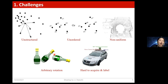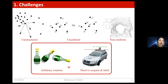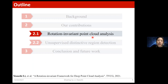For the first two challenges, there are many existing works such as PointNet, DGCNN, and PointCNN, so I won't go into details on those. For the non-uniform issue, our next speaker Rui Hui will address that. In my talk, I will mainly focus on the rotation and supervision challenges and introduce our solutions. Now let's move to our first work — rotation invariant point cloud analysis — published in TVCG this year.